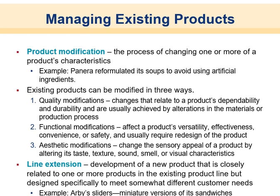Managing existing products sometimes requires product modifications — changing one or more of a product's characteristics. This is very important when growth and revenues start to slow and you want to avoid the peak and decline. An example is Panera reformulating soups to avoid artificial ingredients. Existing products can be modified in three ways. Quality modifications relate to dependability and durability, usually achieved by alterations in materials and production process — the Panera soup approach of higher quality to differentiate.